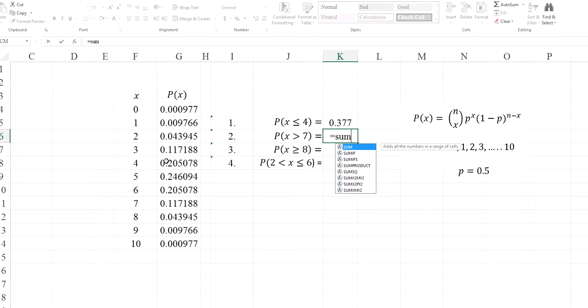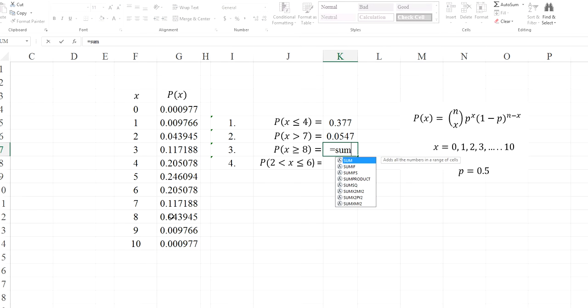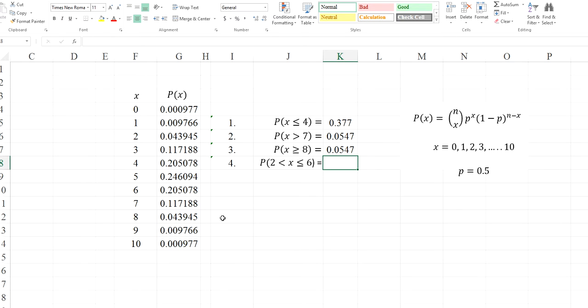Greater than 7. Greater than 7 means 7 is not included. It's 8, 9, 10. Enter. Greater than or equal to 8. Now 8 must be included because greater than or equal to 8. Enter. Less than or equal to 7. Greater than 2. Equal to sum. Less than or equal to 6. So 6 is included. But 2 is not included. So in this case, I got all of these probabilities.